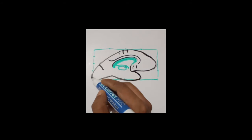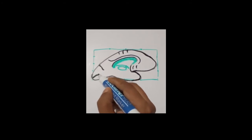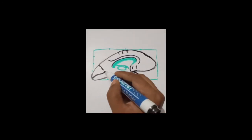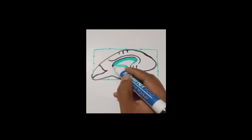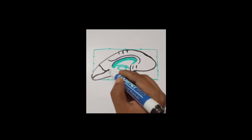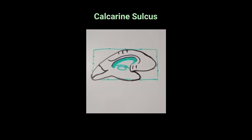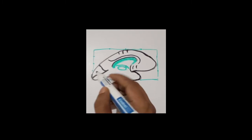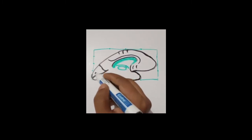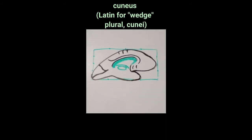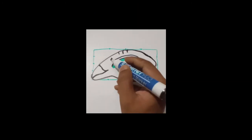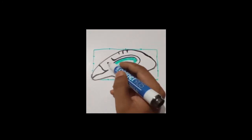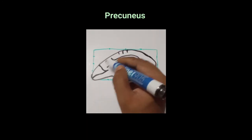Here in the occipital lobe there will be the parieto-occipital sulcus, and another sulcus that will start from the occipital pole, extend forward just above the inferomedial border, and unite with the parieto-occipital sulcus just behind the splenium — it is termed as the calcarine sulcus. The area in between the parieto-occipital sulcus, calcarine sulcus, and the superomedial border is termed as the cuneus. The quadrilateral area just behind the upturned portion of the cingulate sulcus is termed as the precuneus.